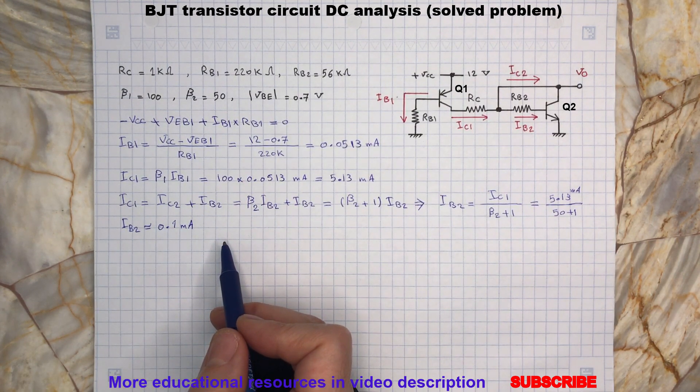Now, as I mentioned at the beginning of the video, the output voltage, which is also the voltage at the collector of Q2, can be calculated as follows.